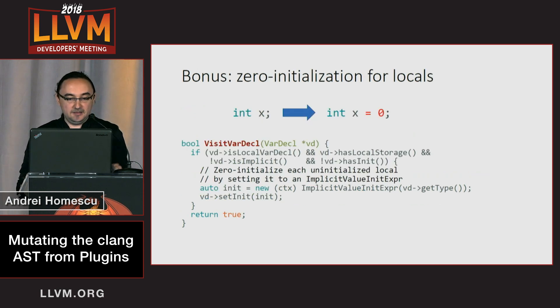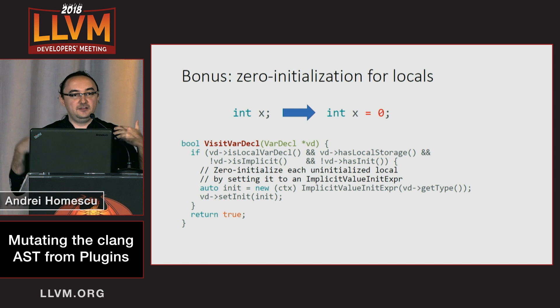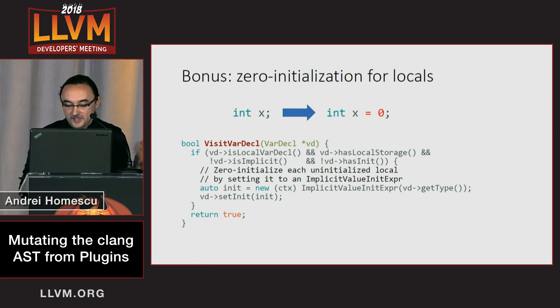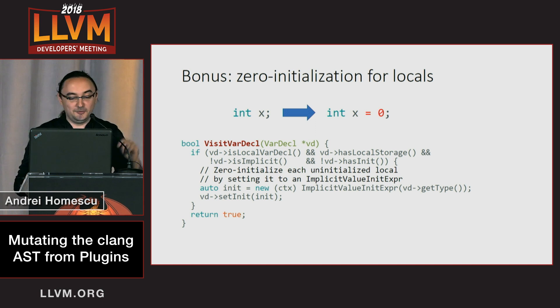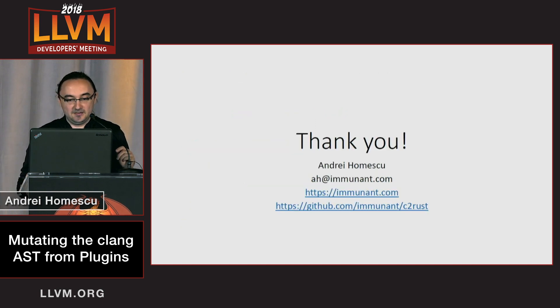As a bonus feature, we needed to force initialize all of our locals to zero. If anyone ever wants to do this in a Clang plugin, here's how you do it — it's about four lines of code. And that is it. Thank you.